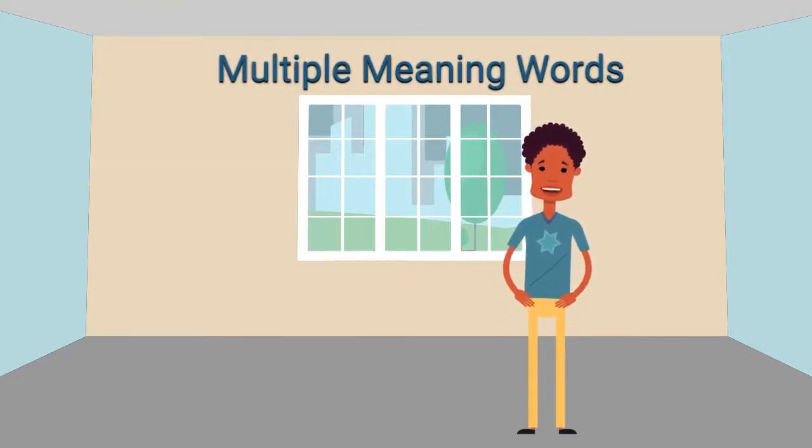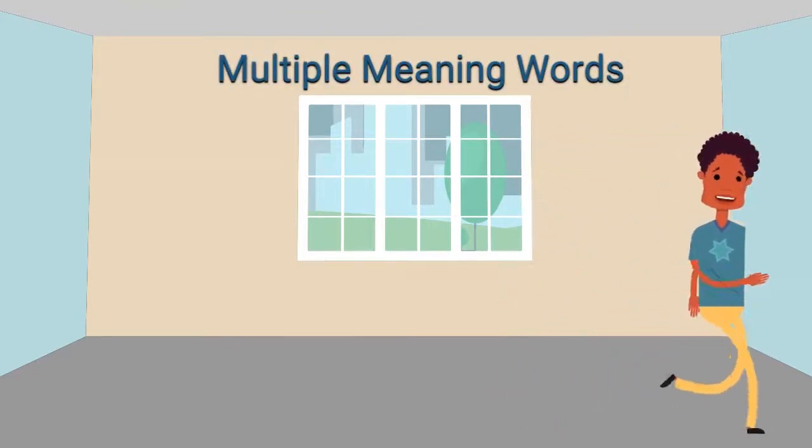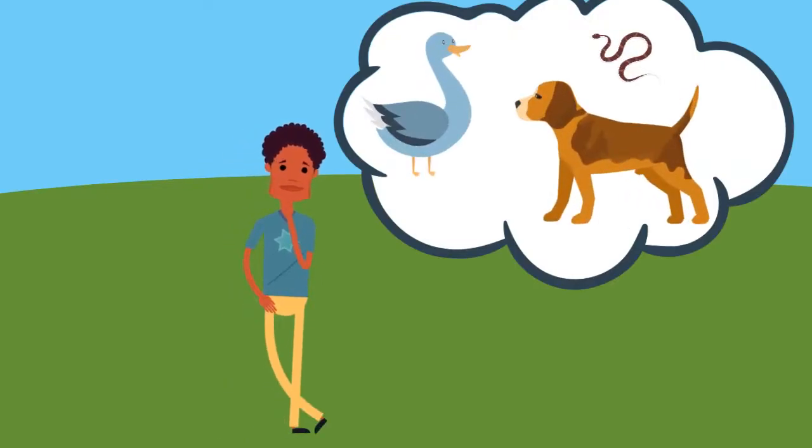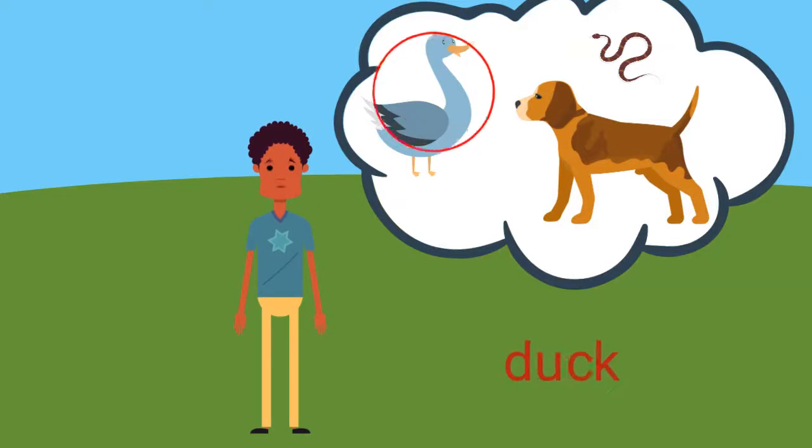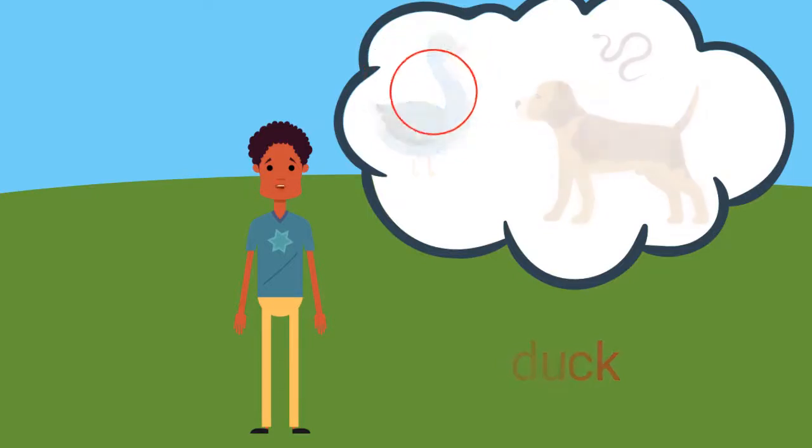Let's talk about another word with multiple meanings. Think about what you do when you bend over to get out of the way of something. Which animal is the same word as what you do when you bend over to get out of the way of something? Well done! A duck is an animal and it also describes what people do to get out of the way of something. The word duck can mean more than one thing.